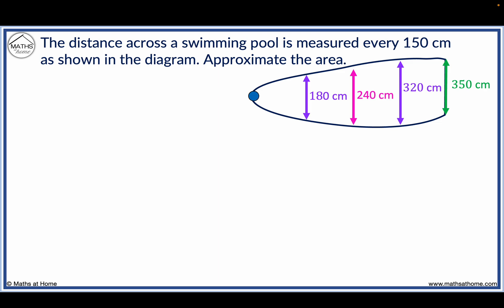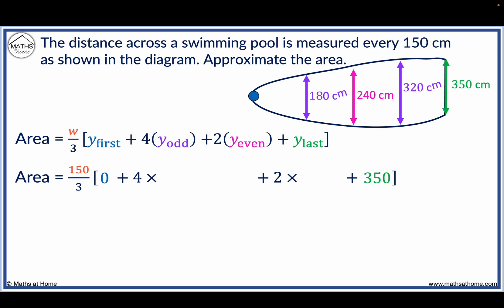The width value of W is 150 centimetres. Y first is just a point, so it is 0. Y last equals 350. Y odd is 180 plus 320. And Y even is just 240.